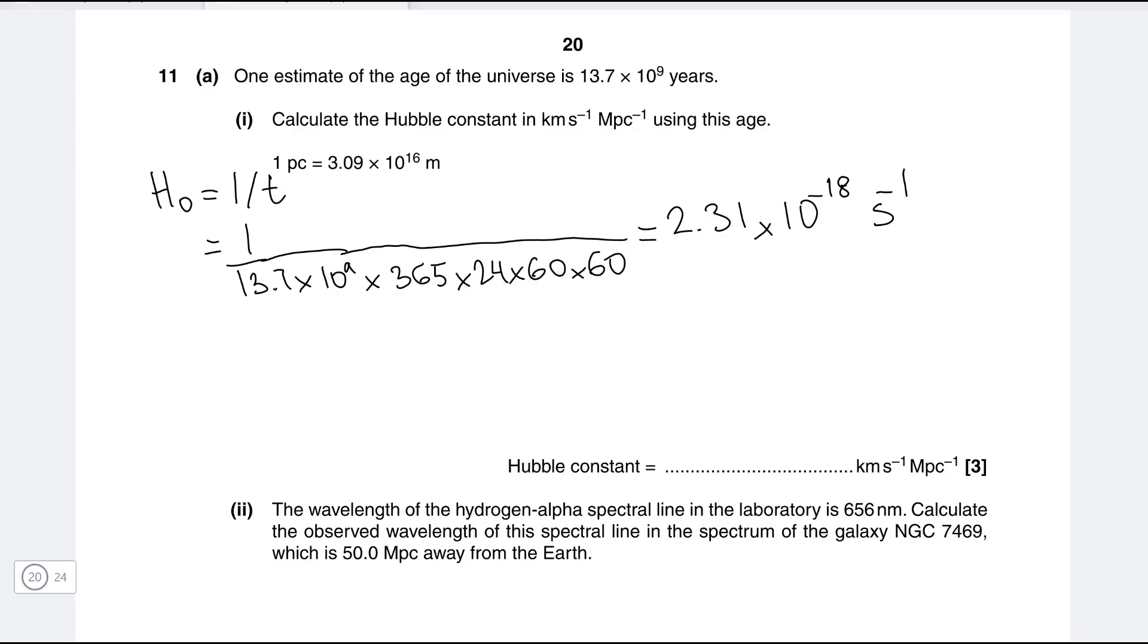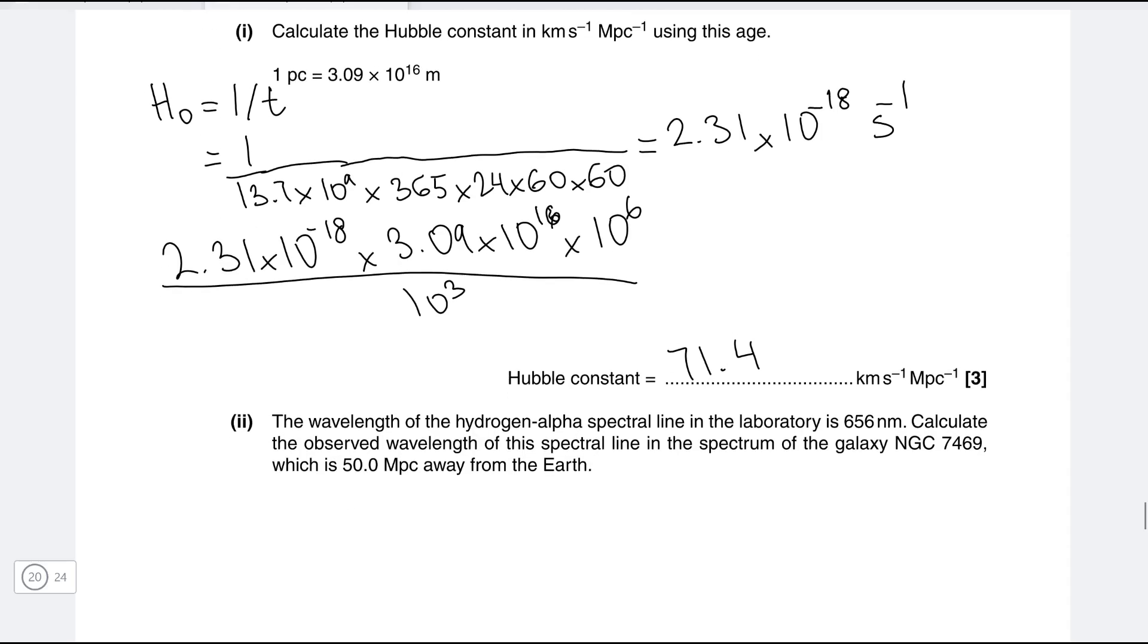Now all we need to do is just to convert seconds to the power of minus 1 to kilometers per second per megaparsec. So we're going to be using our usual conversion factor in reverse. So if we have 2.31 multiplied by 10 to the power of minus 18, what I'm going to be doing is I'm going to be multiplying by 3.09 times 10 to the power of 16 which is a parsec. Now I need to convert it to a megaparsec though so I'm going to be multiplying it by another factor of 10 to the power of 6. And then I'm just going to be dividing it by the factor of kilometers which is 10 to the 3. If I put that into a calculator I'm going to get about 71.4 kilometers per second per megaparsec. This is well within the estimates of Hubble's constant so we know that our answer is probably correct because it's very close to the accepted value which is around 70 kilometers per second per megaparsec.